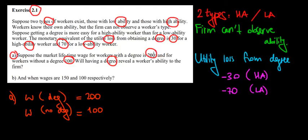What's the intuition here? If the degree reveals the ability, it means that only the better workers will go for it because they are the ones more likely to get it. Let's see if that's going to be the case. Let's see what is the outcome of every type of worker, the high ability and the low ability, to get a degree.